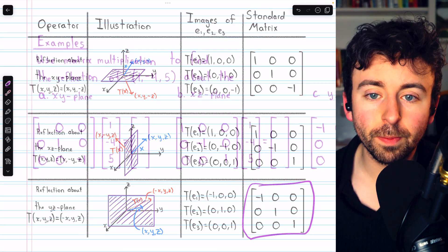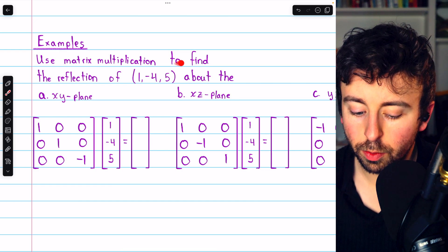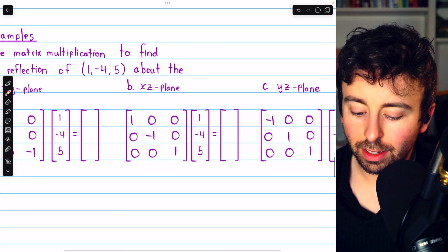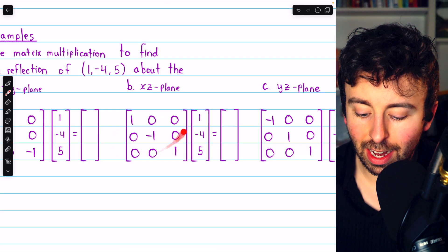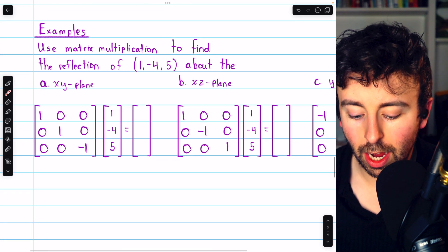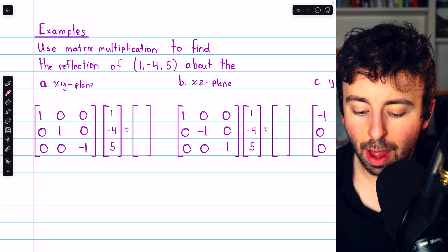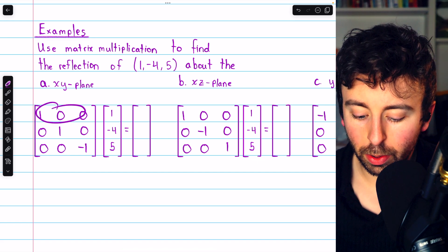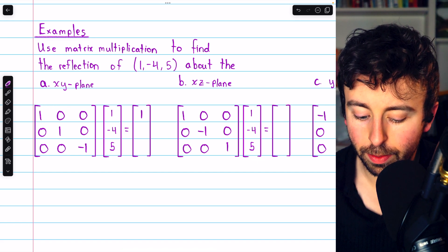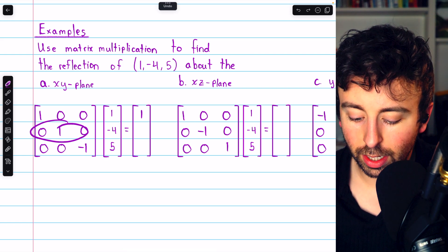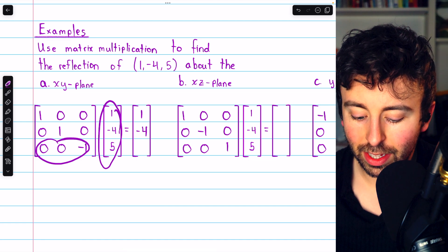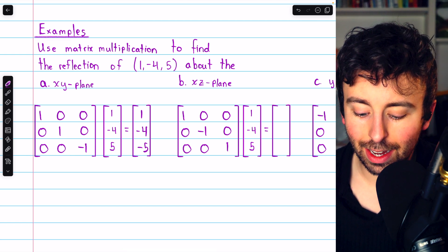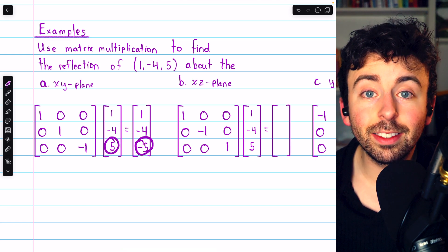Let's practice some computation. We're asked to use matrix multiplication to find the reflection of (1, -4, 5) about the x-y-plane, the x-z-plane, and the y-z-plane. Beginning with reflection about the x-y-plane, we multiply by this standard matrix. The first row produces an entry of 1, the second row produces -4, and the third row negates the 5. As expected, reflection about the x-y-plane just results in a negation of the z-coordinate.